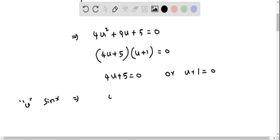So therefore this becomes 4sinx + 5 equals 0, and this becomes sinx + 1 equals 0. So now let's solve for x from this equation.